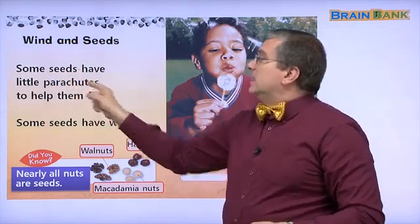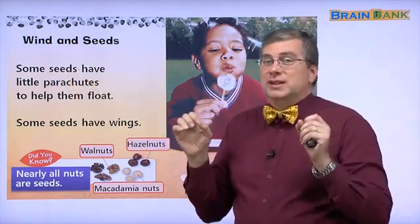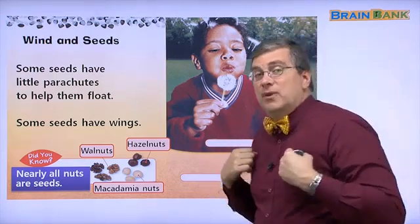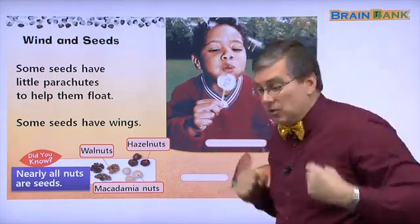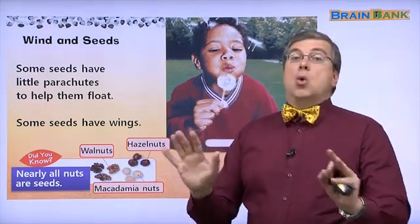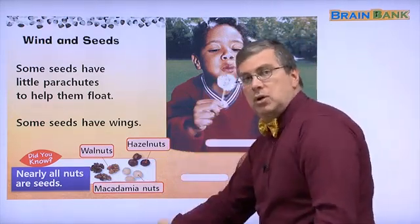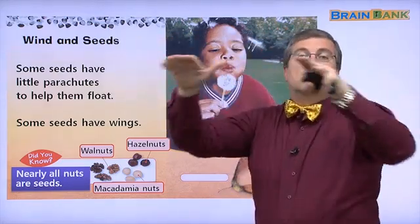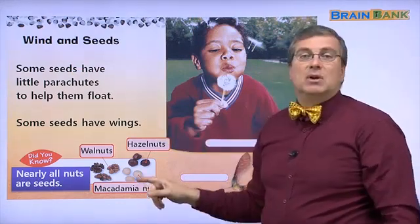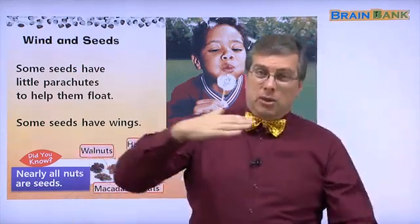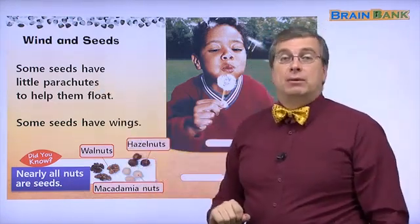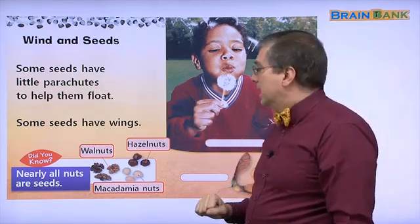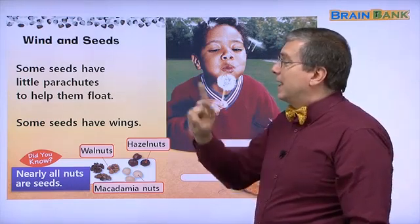Some seeds have little parachutes to help them float. A parachute - if I jump from a plane, I'm in an airplane and I go jump. Am I crazy? No, I have a parachute. I pull a string and a big piece of cloth stops me. That's a parachute and I can fly through the air with my parachute. Some seeds have wings.